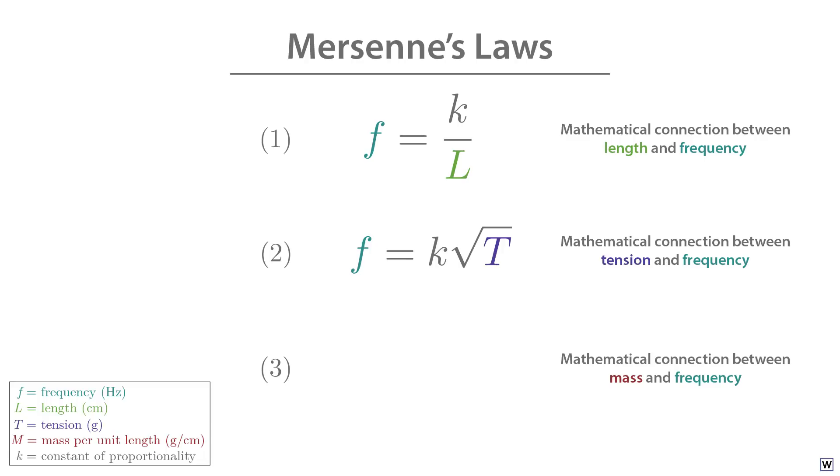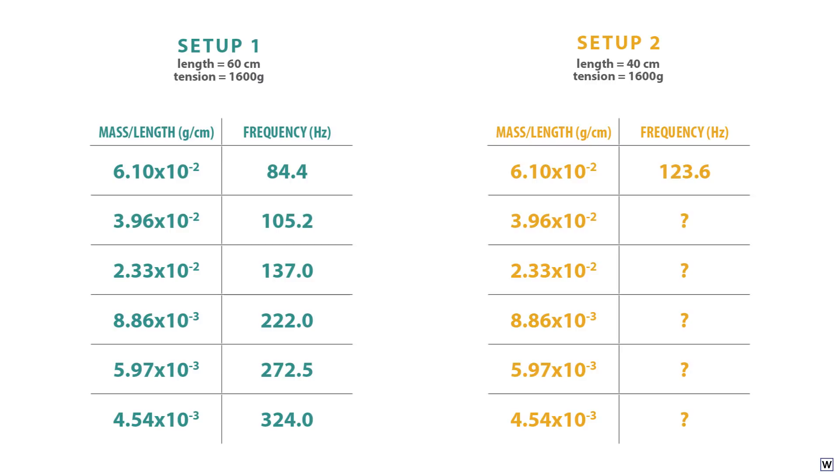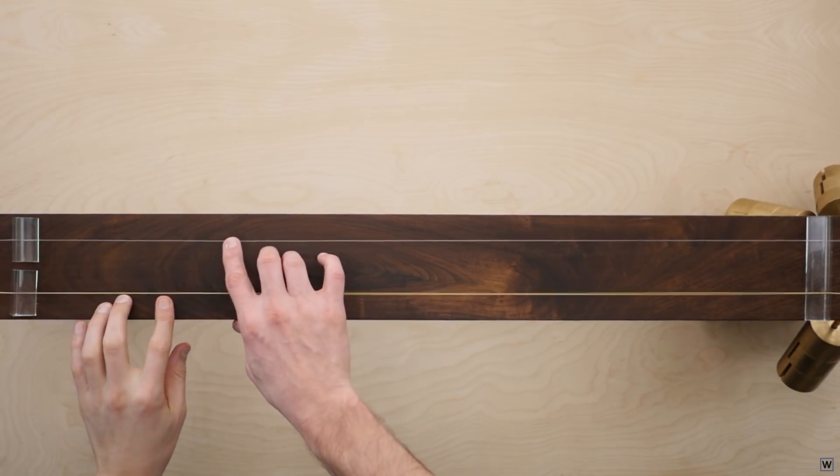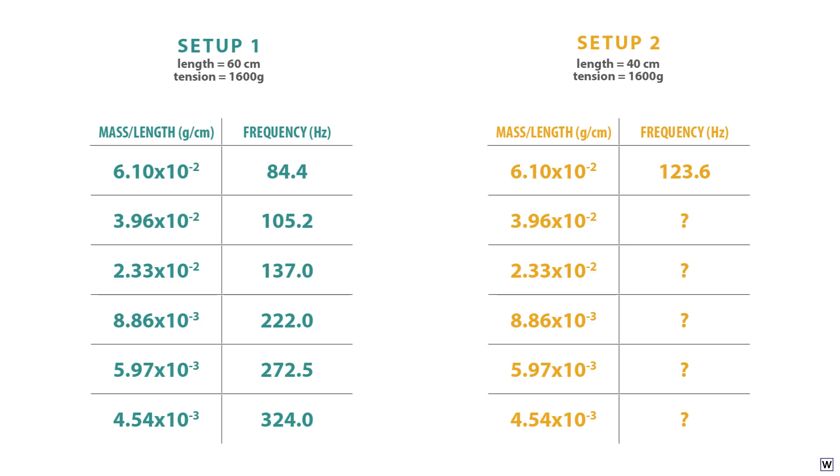Now, thanks to Mersenne's clever experimental setup, he was able to confirm one more guess from Galileo about the connection between the mass and frequency of a vibrating string. If we have a quick look at our mass and frequency data from last time, we see that as our mass per unit length decreases, our frequency increases. This seems pretty reasonable. Lighter strings make higher pitched sounds. Now, how exactly does frequency increase as mass decreases?